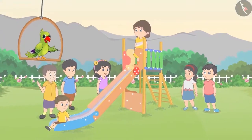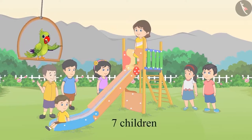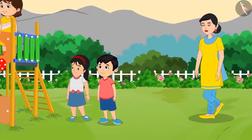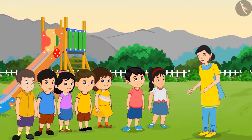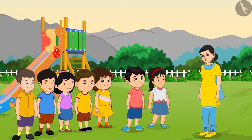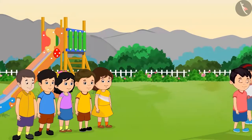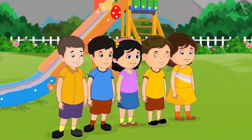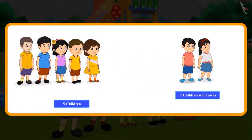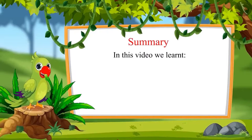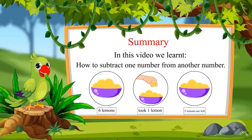It is evening time and Chotu and Pinky are playing with five of their friends in the park — seven children total. Chotu and Pinky's mother comes to take them home. Chotu and Pinky say bye to their friends and go back home with their mother. Out of seven children, two children went away, so there are five children left. That is all for today. In this video, we learned how to subtract one number from another number. Till then, bye friends.